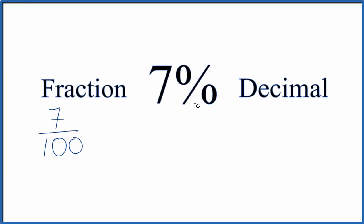So 7%, same thing as 7 over 100 as a fraction. To get a decimal for 7%, all we really need to do is divide 7 by 100. You can do that on your calculator. You get 0.07.